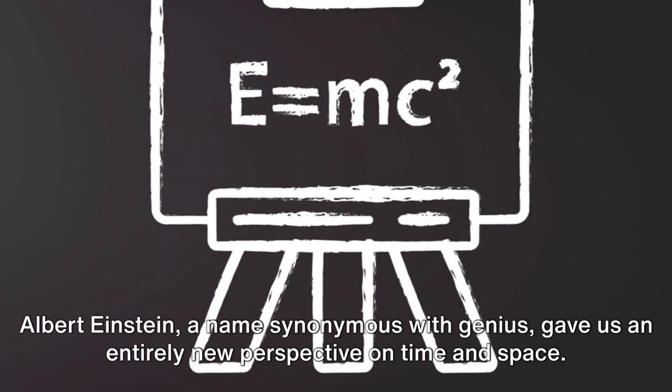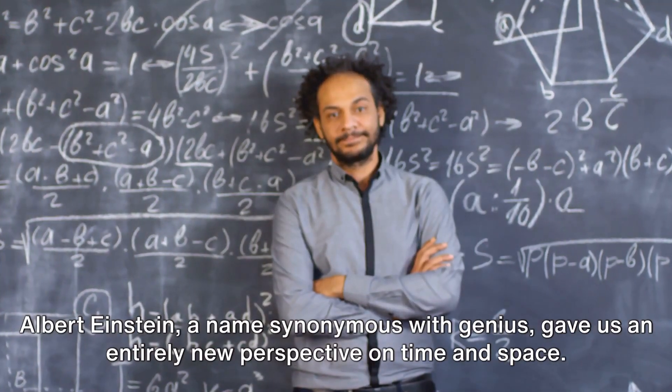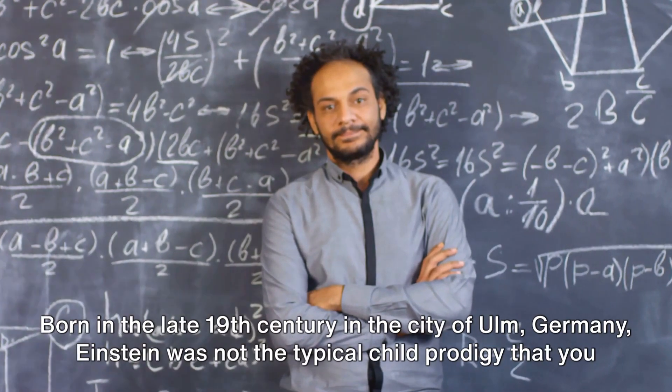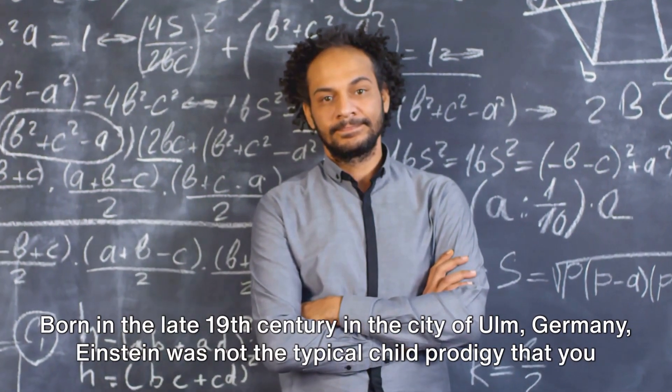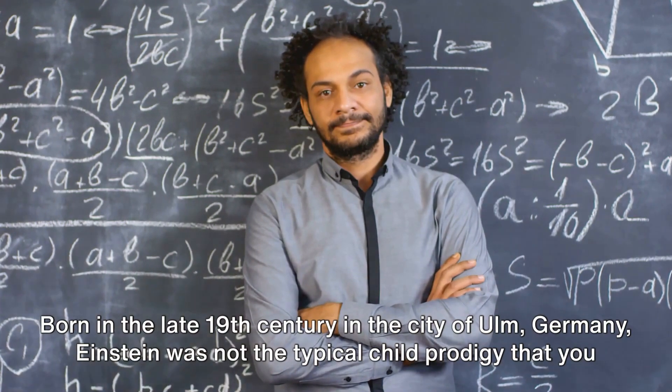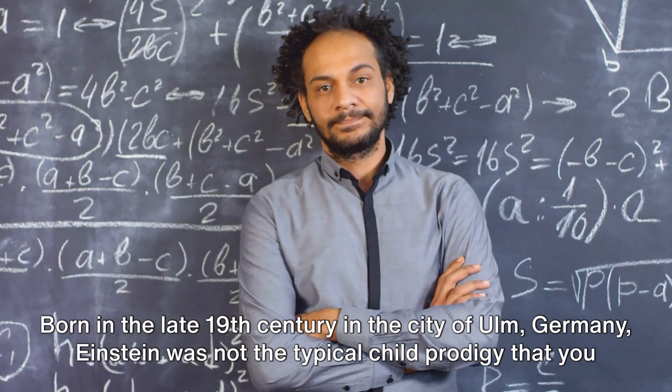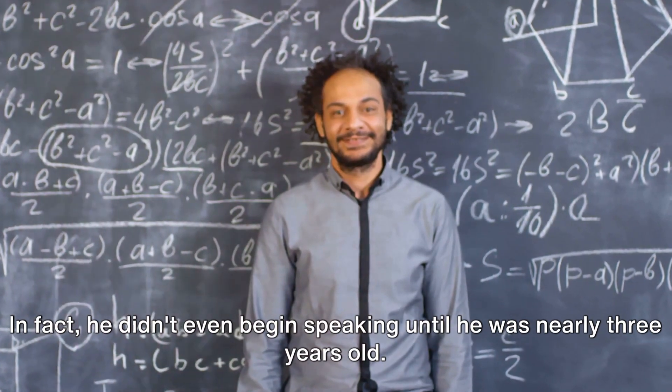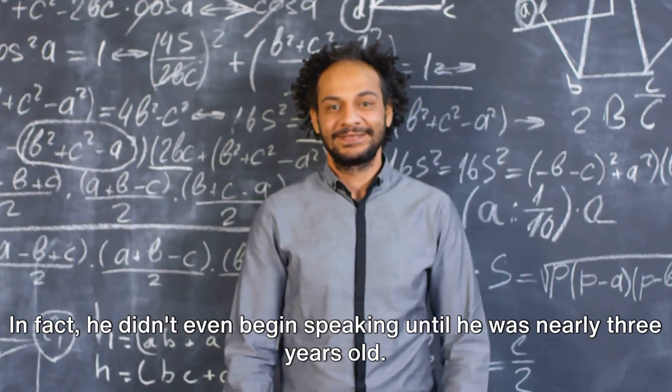Albert Einstein, a name synonymous with genius, gave us an entirely new perspective on time and space. Born in the late 19th century in the city of Ulm, Germany, Einstein was not the typical child prodigy that you might expect. In fact, he didn't even begin speaking until he was nearly three years old.